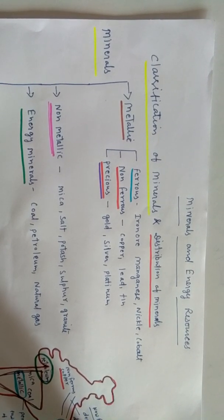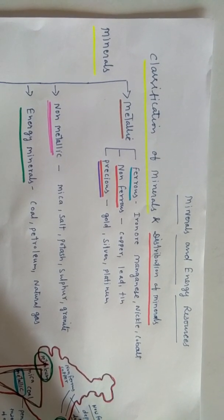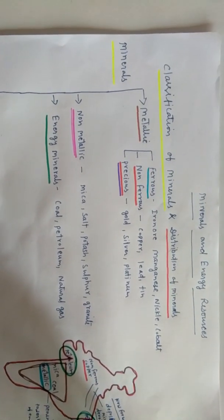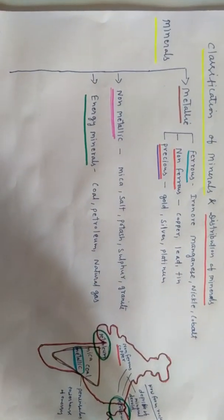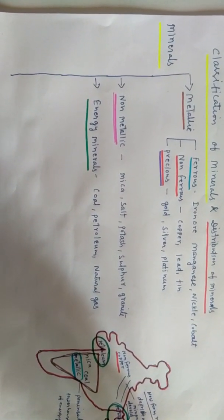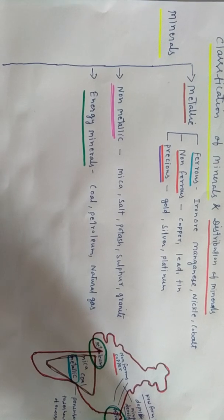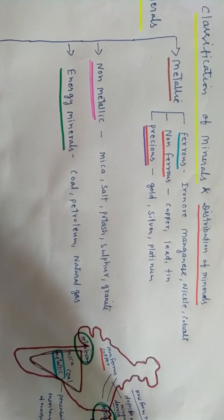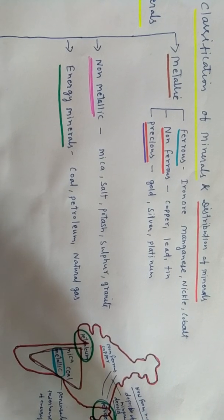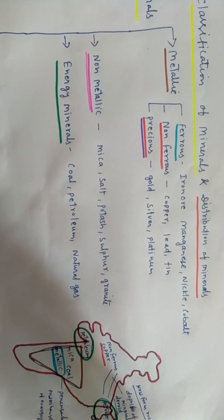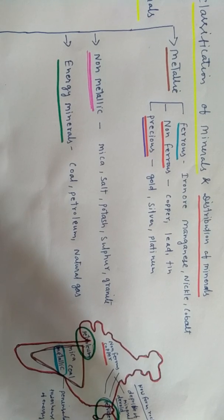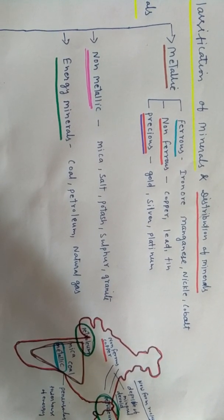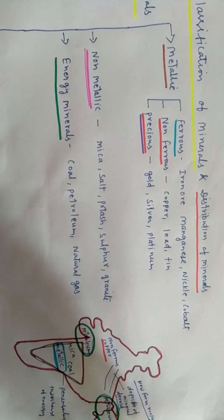In the first section we will discuss the classification of minerals. Minerals have been classified into different categories: metallic minerals, non-metallic minerals, and energy resources. Metallic minerals are classified into three categories — ferrous, non-ferrous, and precious minerals. Ferrous minerals means iron ore, manganese, nickel, cobalt — minerals where some proportion of iron is found.